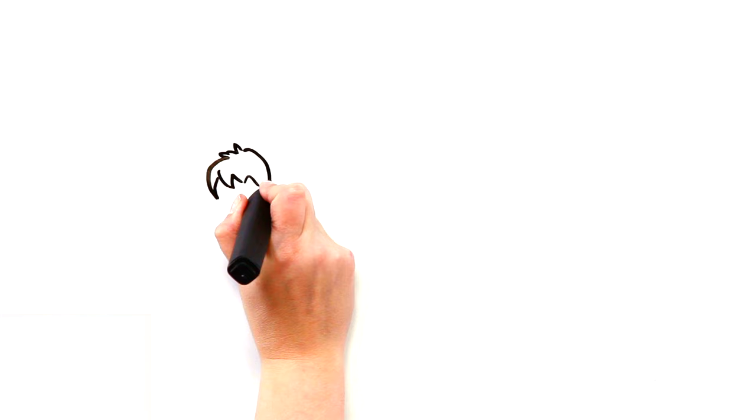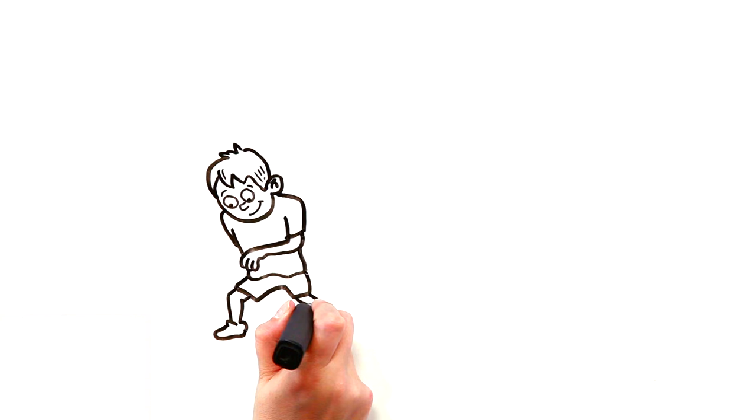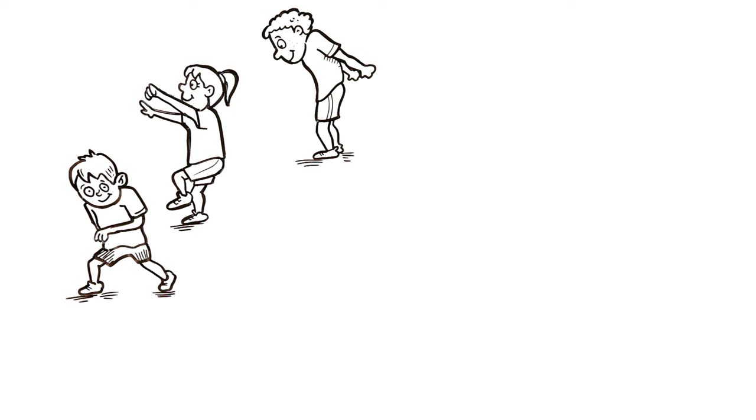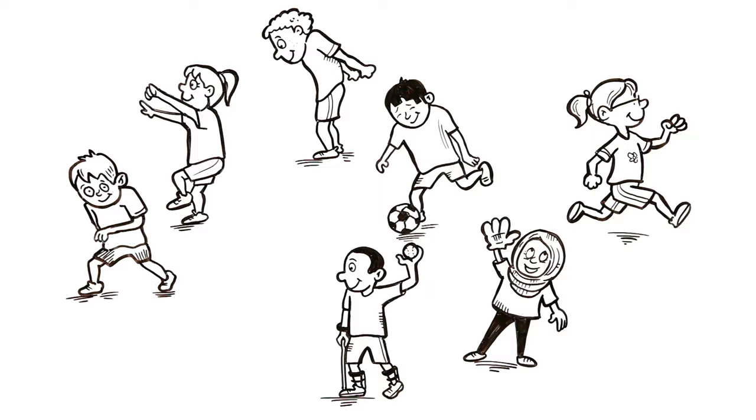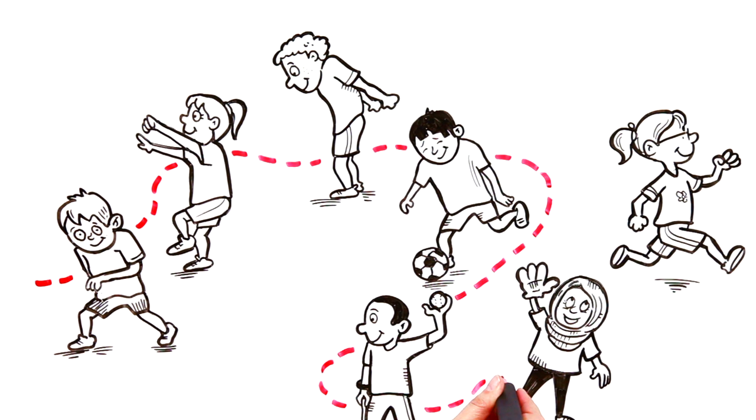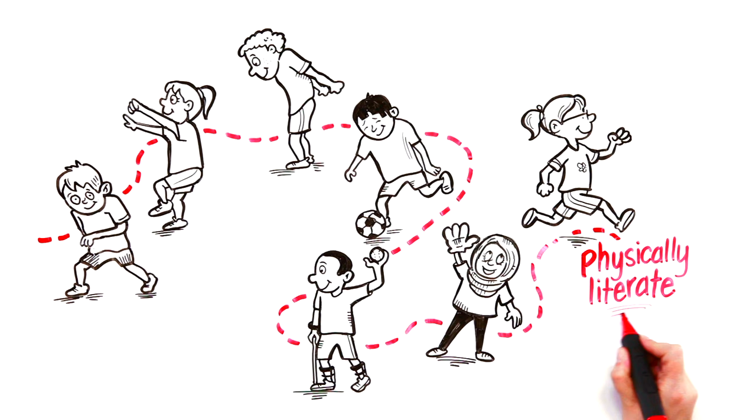To be active and to have fun playing lots of games and sports, there are a lot of basic skills you should learn. Things like how to dodge, skip, jump, kick, overhand throw, catch, and run. If you learn skills like these, you'll end up using them in sports and physical activities, and you'll be confident playing them. This is called being physically literate.